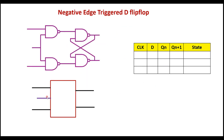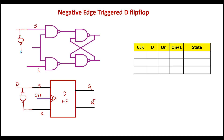Now let me consider the negative edge triggered D flip-flop. The circuit will be the same — this is S, this is R. A negative edge is represented by a bubble with a cap mark on the clock input. For the D flip-flop, the complement of D is connected to R. The output of the inverter is connected to R. This is the D input. This is Q and this is Q bar. This is the D flip-flop with negative edge triggering.